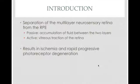Retinal detachment is the separation of the multilayer neurosensory retina from the RPE. This could happen passively when there's accumulation of fluid between the two layers — the retina and the retinal pigment epithelium — or it could happen actively, in which case something is actively pulling the retina off, which could be the vitreous.